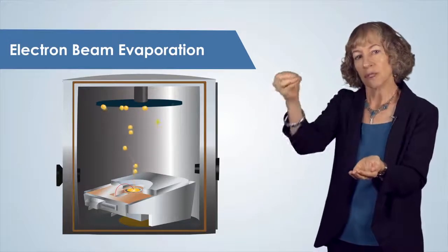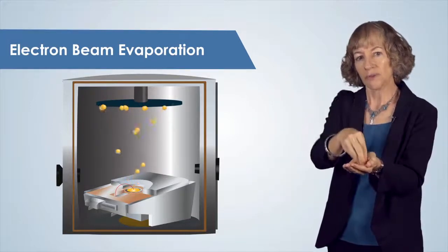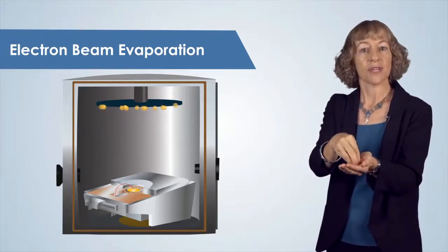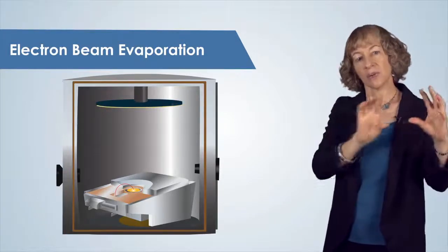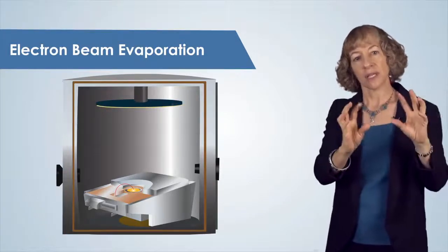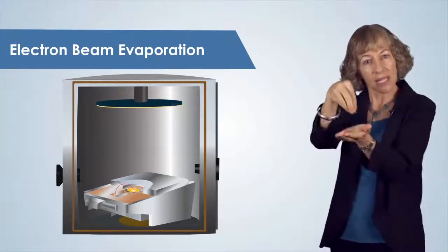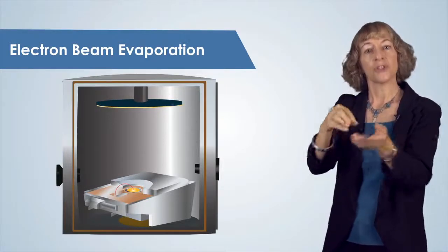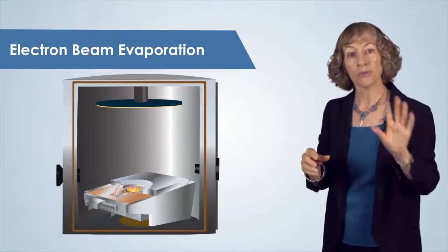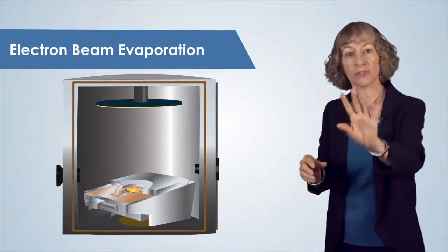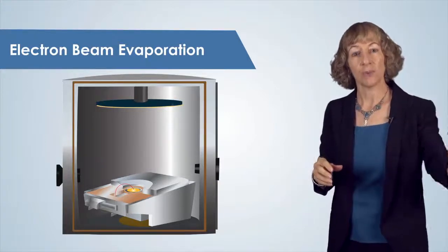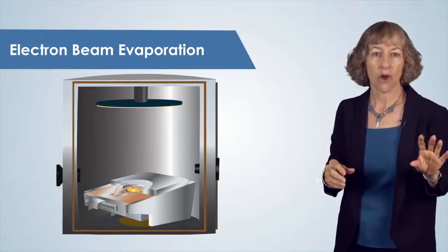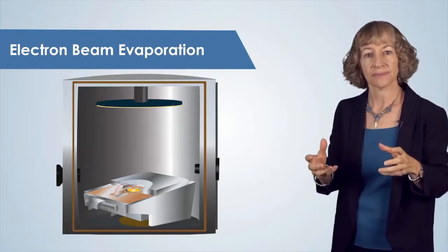This electron beam is well confined, and one of the advantages of e-beam evaporation is that we can rotate different source materials into the path of that electron beam so that we can deposit multiple materials sequentially without opening the vacuum system, which is also called breaking vacuum or venting.